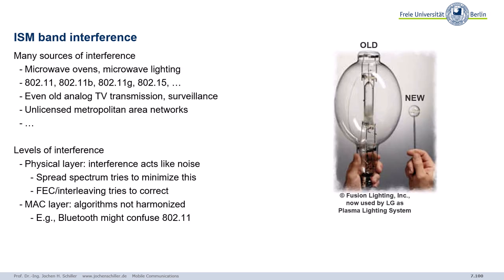Other ISM band occupants include microwave ovens and microwave lighting. There are even old surveying systems using analog transmission, metropolitan area networks, and more. Because the ISM band is unlicensed, there are many different sources of interference. At the physical layer you have a lot of interference acting as noise. We have spread spectrum, frequency hopping, and forward error correction to help, but interference remains significant.